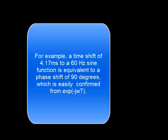For example, a time shift of 4.17 ms to a 60 Hz sine function is equivalent to a phase shift of 90 degrees, which is easily confirmed from e to the negative j omega capital T.